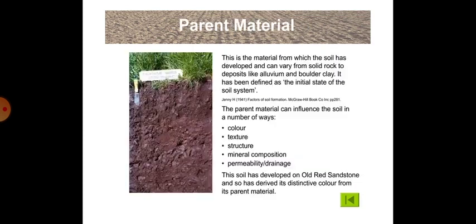First we will discuss about the parent material. This is the material from which the soil has developed and can vary from solid rock to deposits like alluvium and boulder clay. It has been defined as the initial state of the soil system. The parent material can influence the soil in a number of ways: color, texture, structure, mineral composition, and permeability or drainage. The soil developed on old red sandstone has derived its distinctive color from its parent material.